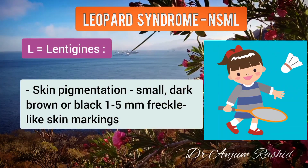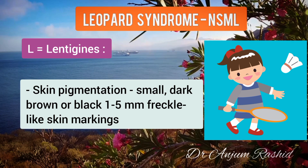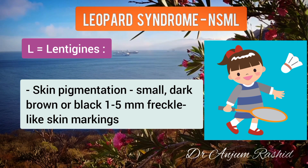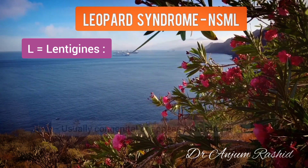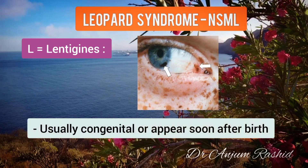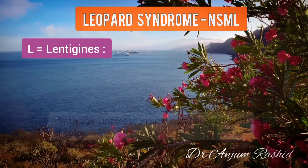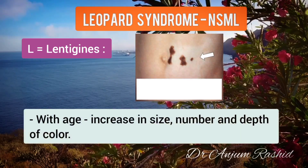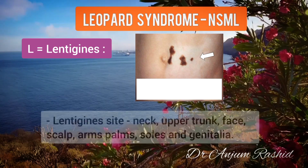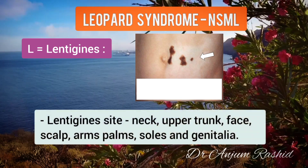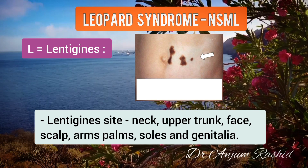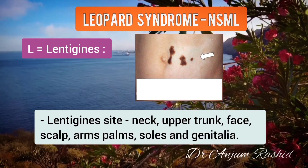L stands for Lentigines — cutaneous pigmentation in the form of small dark, 1 to 5 millimeter lentigines, which are usually congenital or appear soon after birth. With age, they increase in size, number, and depth of color. They tend to be concentrated around the neck and upper trunk, but may also appear on the face and scalp.